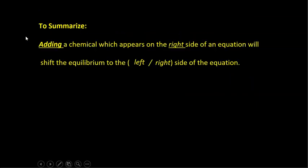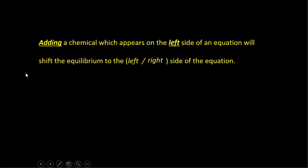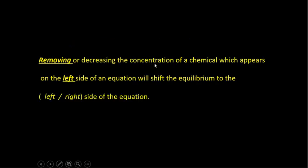To summarize the rules: adding a chemical that appears on the right side of the equation shifts the equilibrium to the left. Adding a chemical that appears on the left side of the equation shifts the equilibrium to the right. Removing or decreasing the concentration of a chemical on the right side shifts the equilibrium to the right side of the equation.